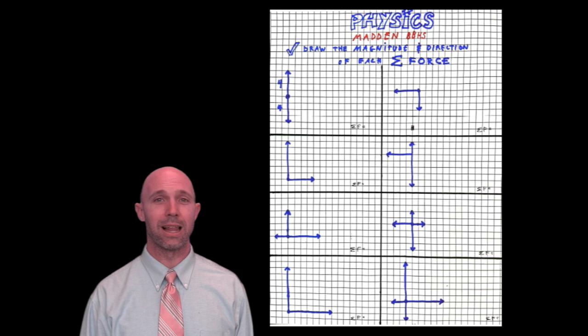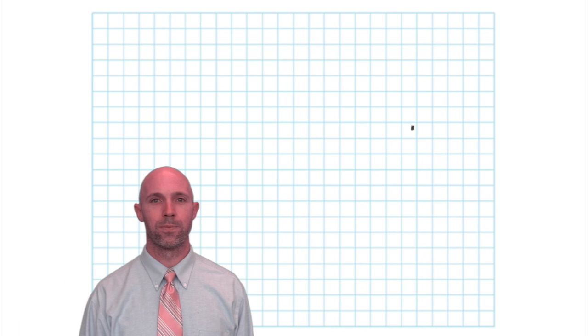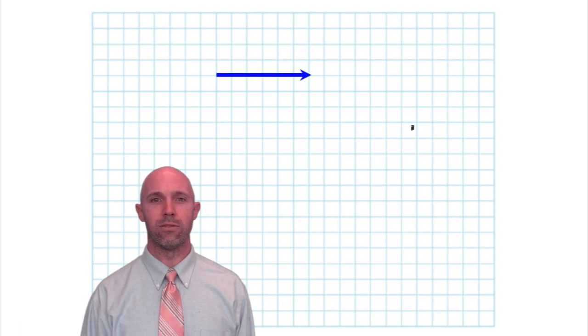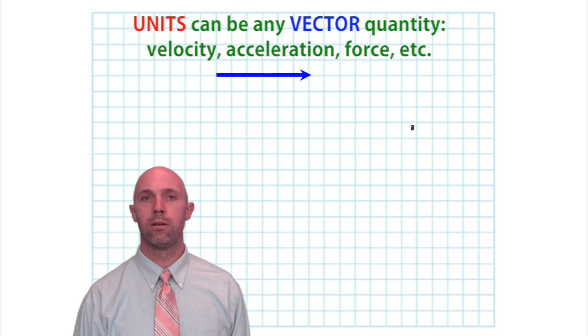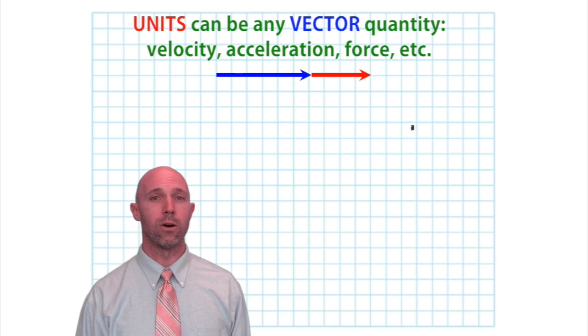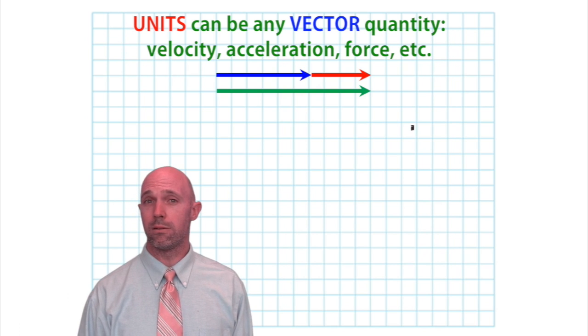Here are some that we did in class. Really helpful to do them on graph paper. Let's look at some vectors that are additive. If you add a 6-unit blue arrow added to a 4-unit red arrow, you'd get 10.